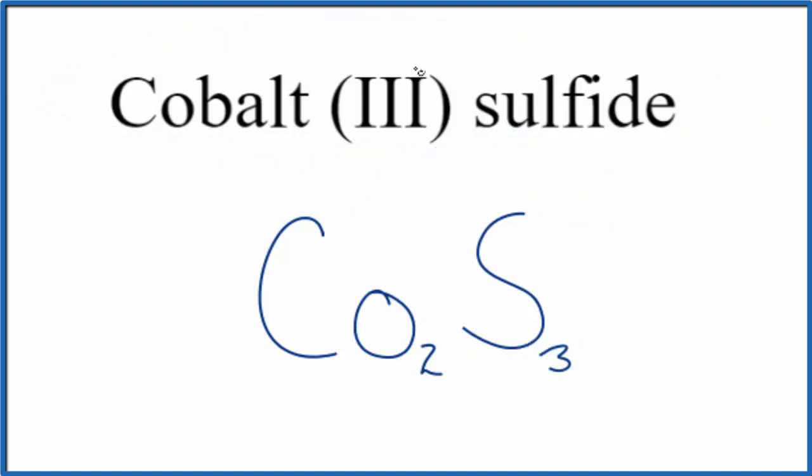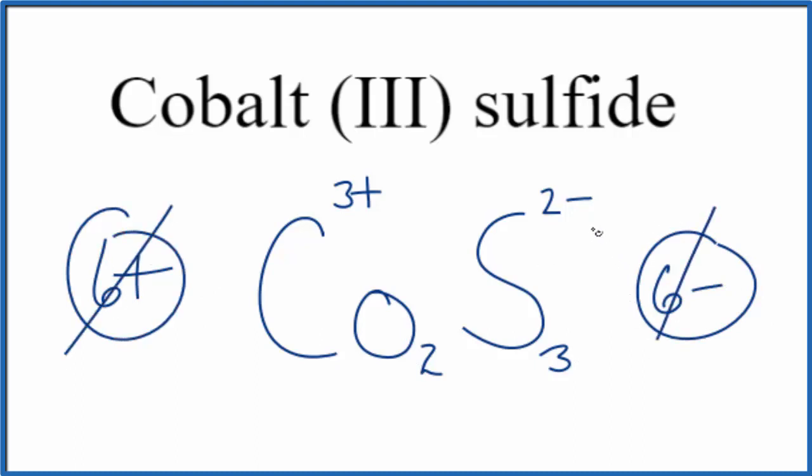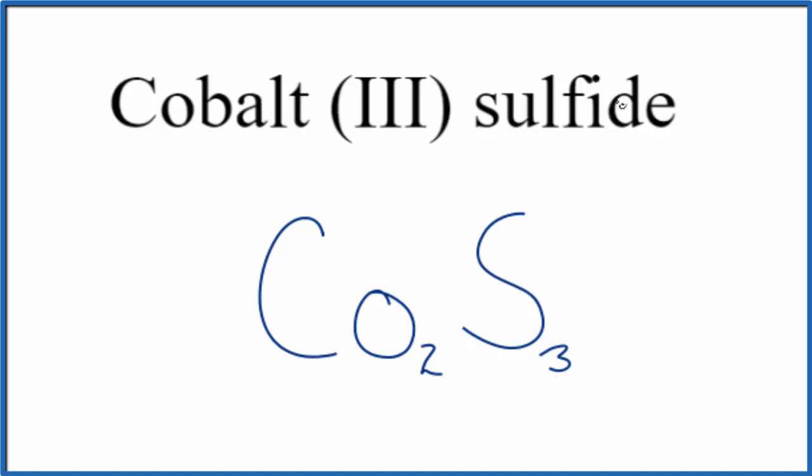And we can check that. We said cobalt, that's 3-plus. Sulfur, group 16, 6A on the periodic table, that's going to be 2-minus. So 2 times 3-plus is 6-plus, 3 times 2-minus, 6-minus. These two numbers add up to zero, give us a net charge of zero. This is the formula for cobalt-3-sulfide.